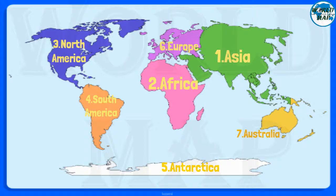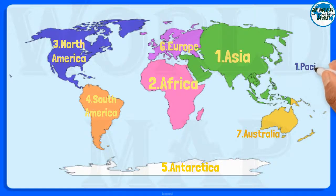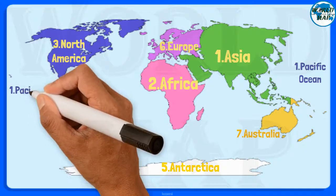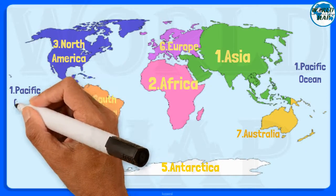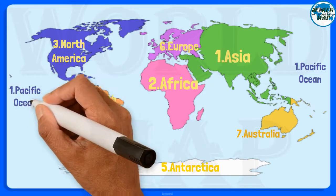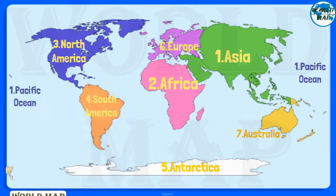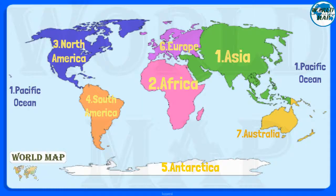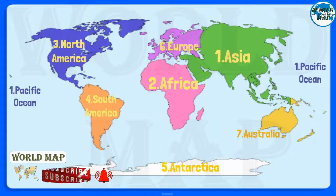What are the five oceans of the world? Number 1: Pacific Ocean. The Pacific Ocean is the largest ocean, covering more than 30% of the Earth. This is close to half of the water on Earth.